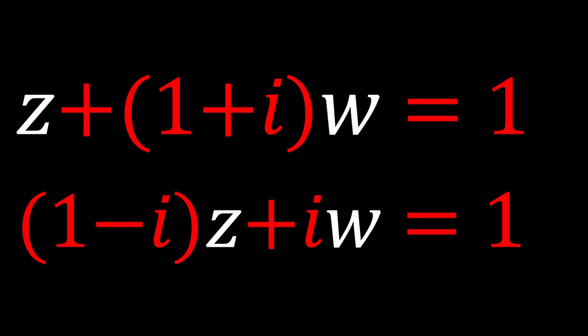We have Z plus 1 plus I times W equals 1, and 1 minus I times Z plus IW equals 1.